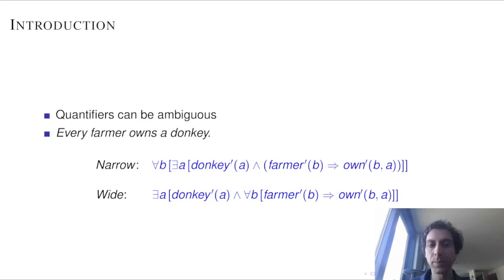A sentence like 'every farmer owns a donkey' is an ambiguous sentence and has two different readings shown below. The main difference between them is the scope between existential and universal quantifier.